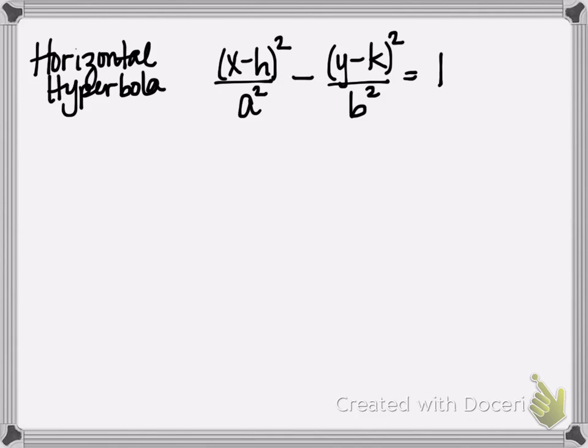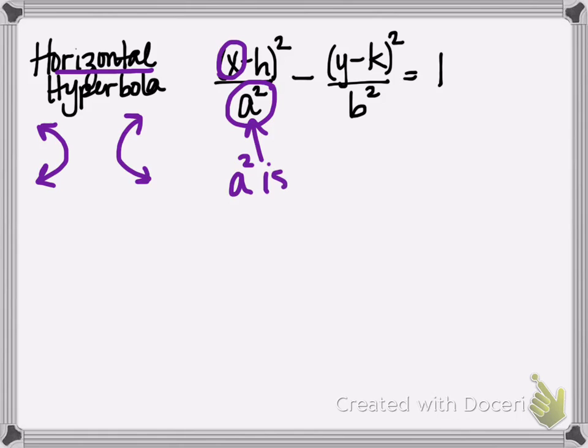Now, in terms of A and B, A squared, you'll notice, is underneath X. That's how we know this is going to be a horizontal hyperbola, which means we have a horizontal transverse axis. So that's telling us that our hyperbola will have a branch that opens to the left and another branch that opens to the right. And in addition, you'll notice that A squared is first.